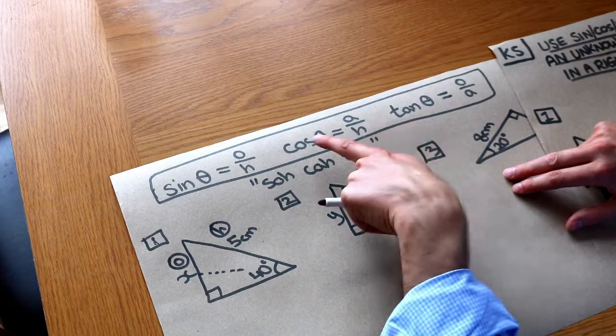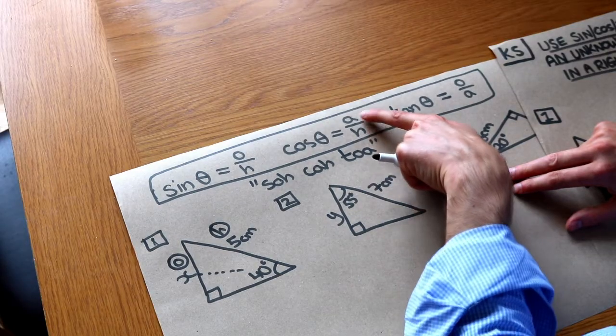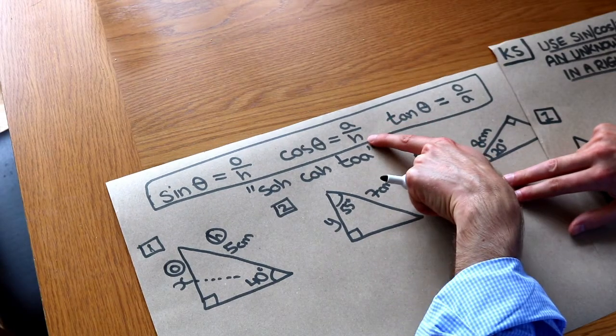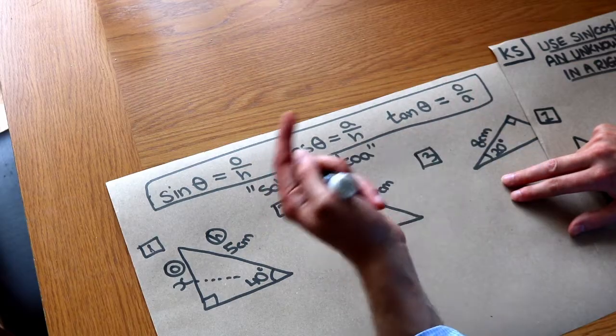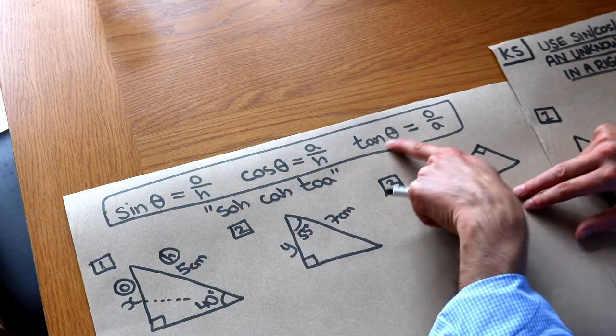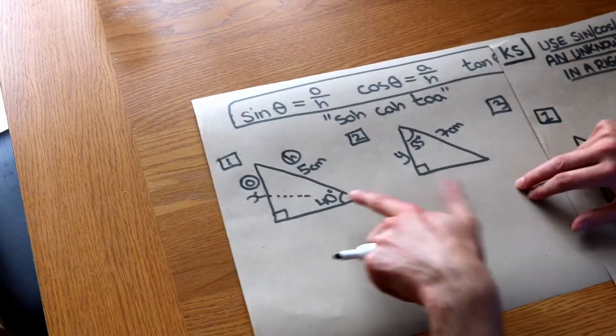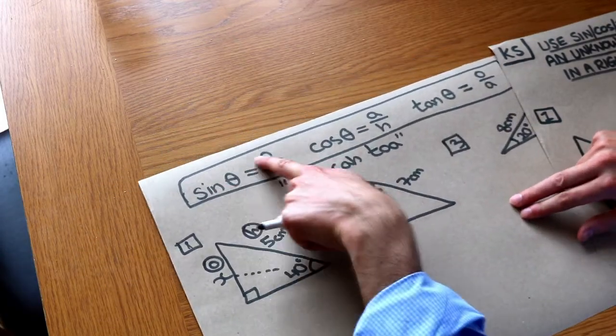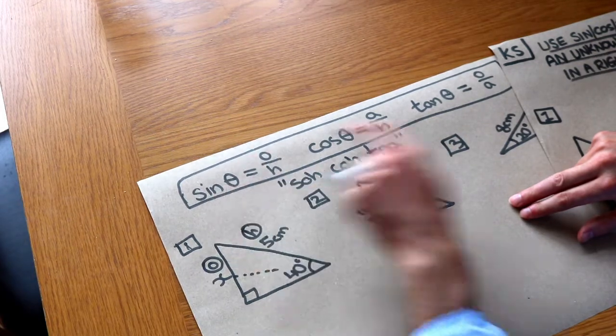And then similarly if we're involving A and H, so remember A means adjacent, H means hypotenuse, we would use cos and we'll see an example of that. And if we involve the opposite and the adjacent of a triangle we would use tan. Now we've labeled O and H here, and you can see this formula involves O and H. So we're going to use sine.